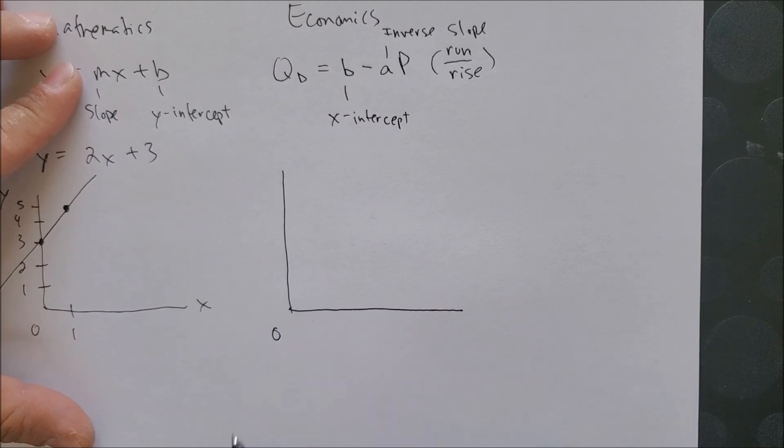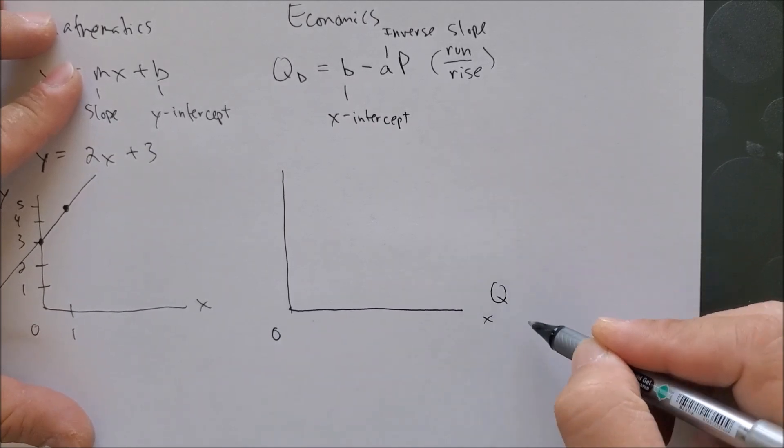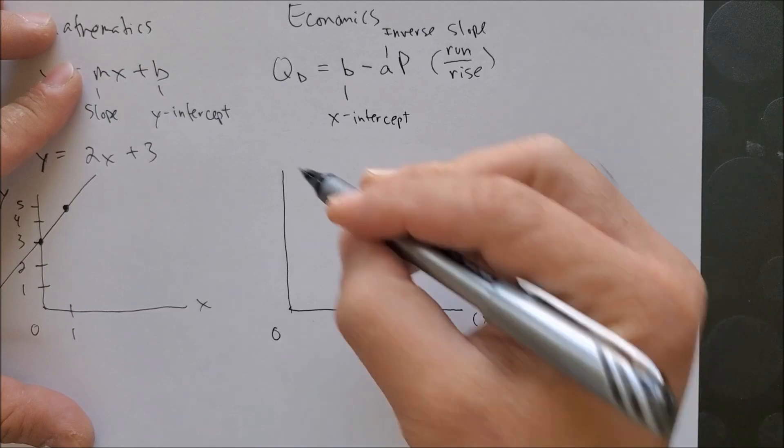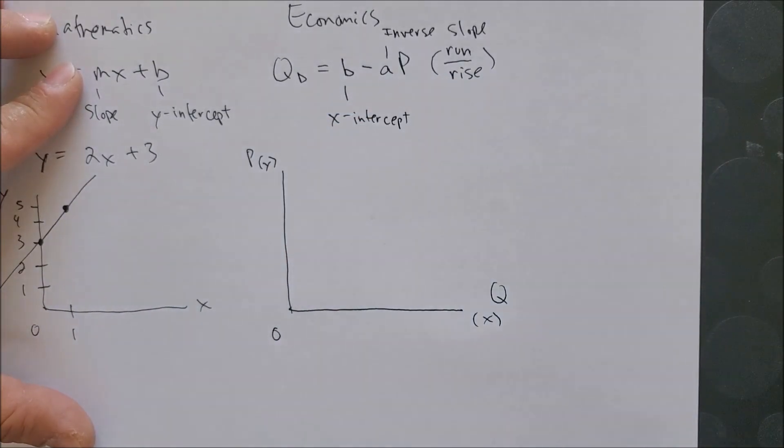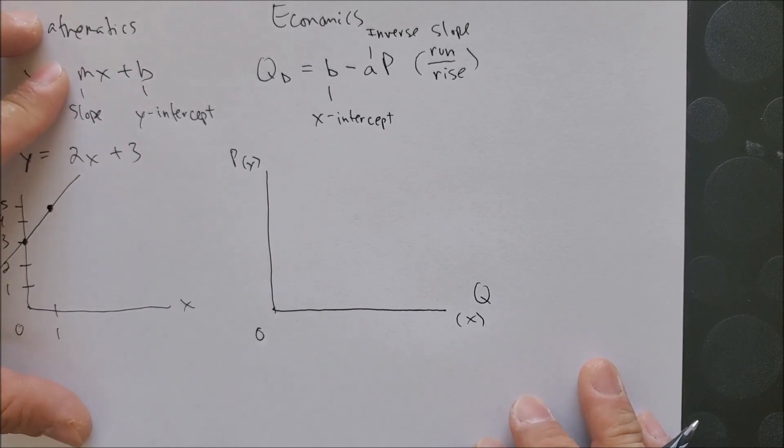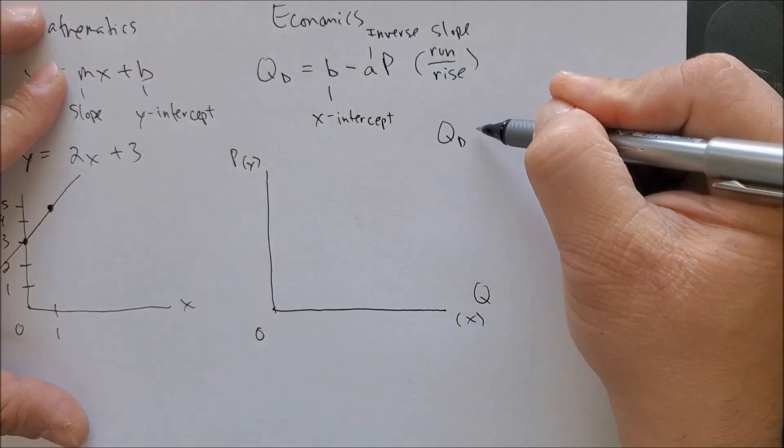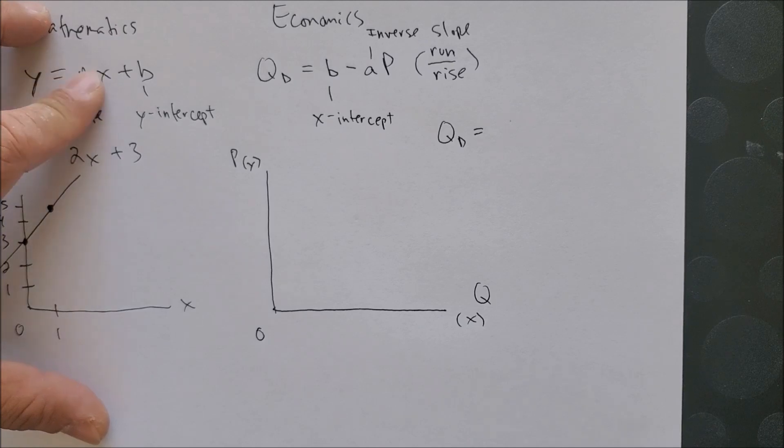So here we can put zero x-axis, put here quantity, price on the y-axis. And now we can look at the equation once again, q sub d equals something.